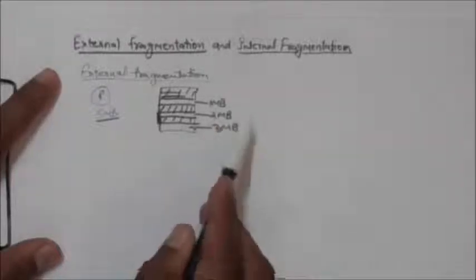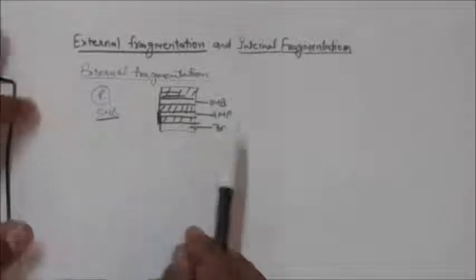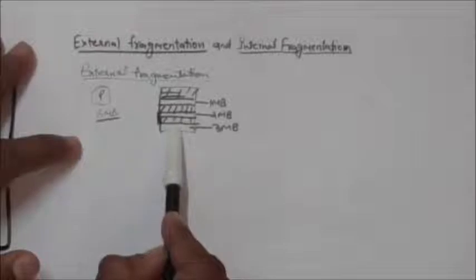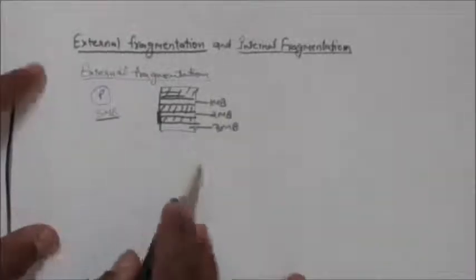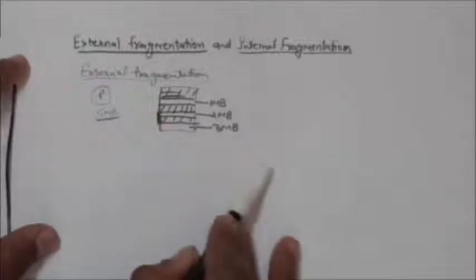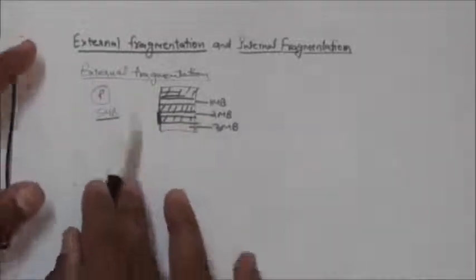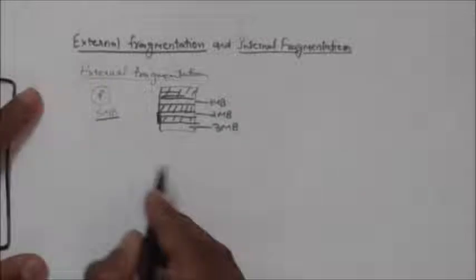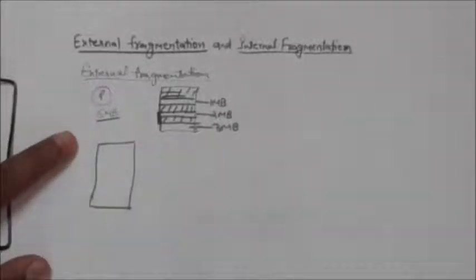This situation is called external fragmentation. In external fragmentation, memory is wasted in the form of small holes scattered throughout the memory. If they are combined together to form a single large hole, they could be used to satisfy the memory requirement of some processes. Such a condition is called external fragmentation.